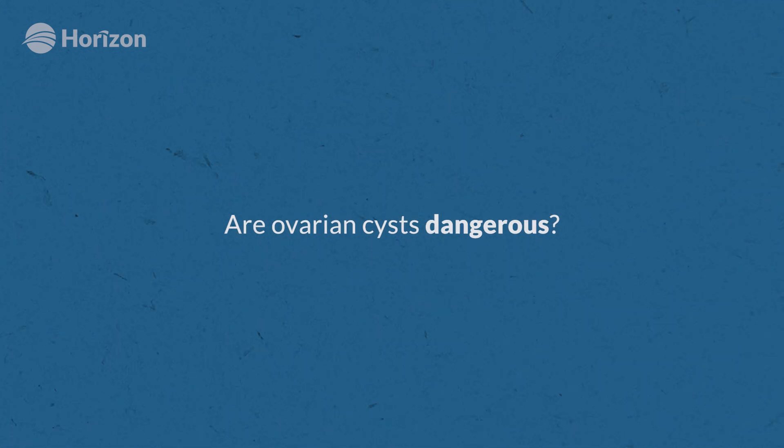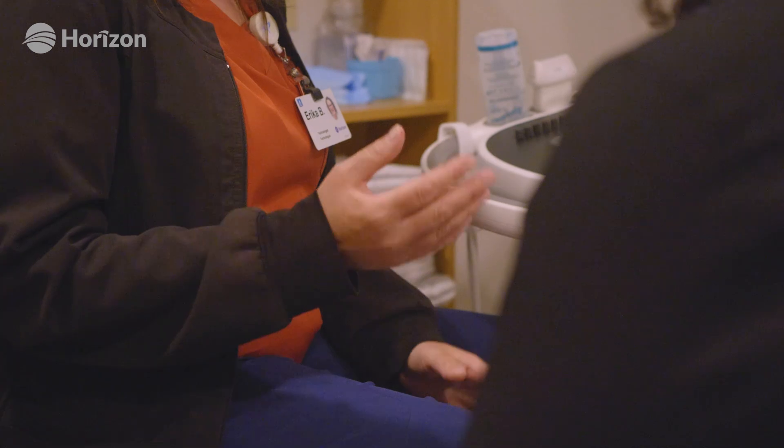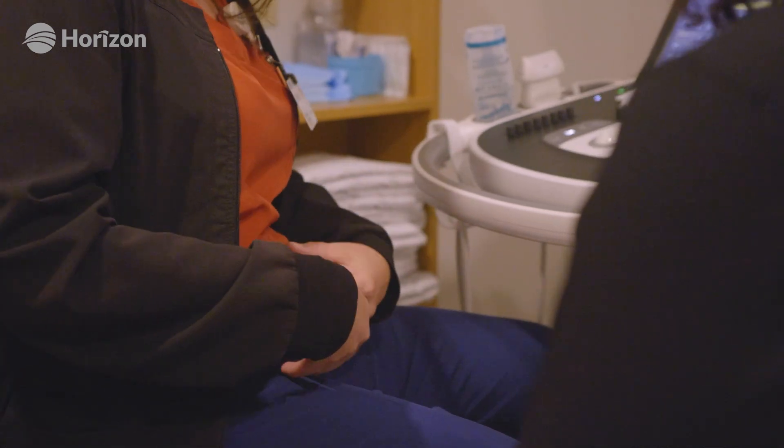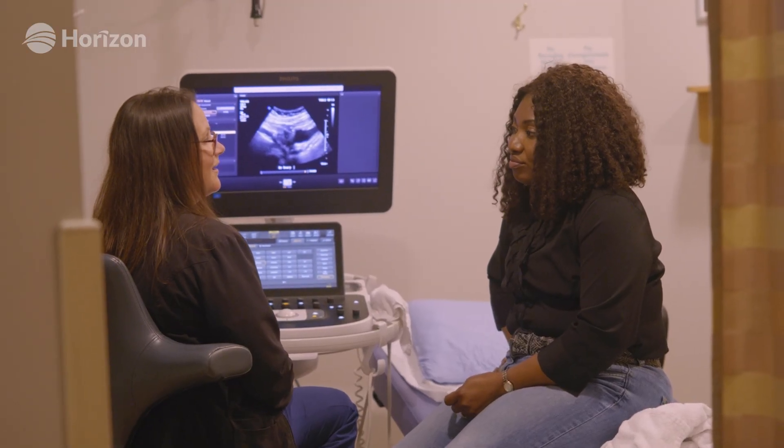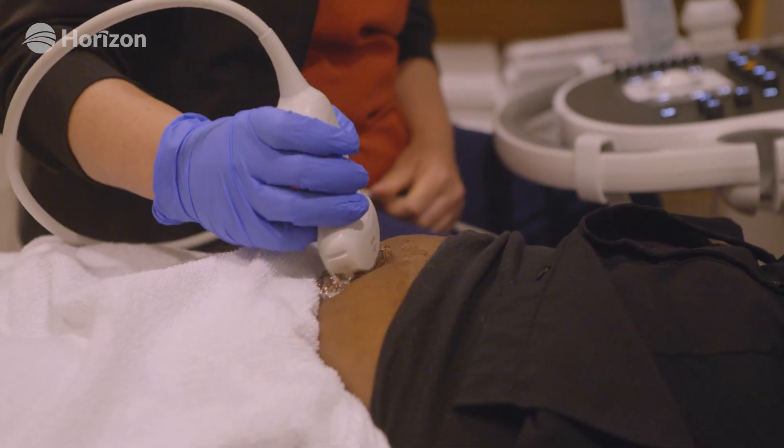Ovarian cysts are very rarely dangerous. If they rupture and bleed and continue to bleed, that can be an issue. An ovarian cyst also increases the risk of what we call ovarian torsion, or when the ovary twists on itself, which depending on size and type can cause loss of an ovary. The majority of cysts don't have malignant potential — they don't turn into cancer — but there are some rare cysts that can.